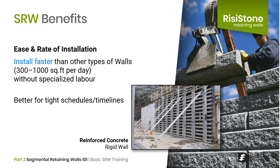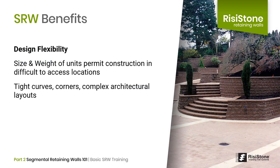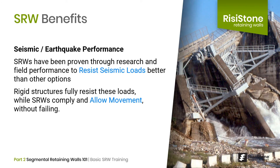SRWs are typically installed much faster than other types of walls. For machine-placed SRWs, installation rates from 300 to 1,000 square feet per day are possible, which works very well for tight timelines. Due to the segmented nature of SRWs, their size and weight allows for design flexibility to create complex architectural layouts or access difficult locations. SRWs can also be designed to have far superior appearance with varying colors and textures. Finally, research and field performance has proven that under seismic or earthquake loading conditions, SRW technology is far superior — rigid structures attempt to resist earthquake loads, while SRWs allow greater movement and therefore dissipate the loads better.